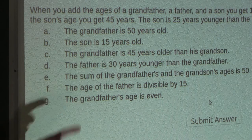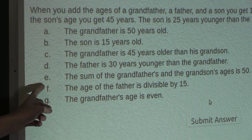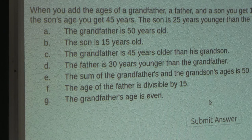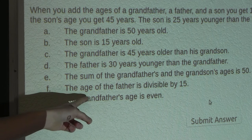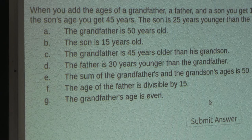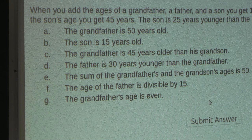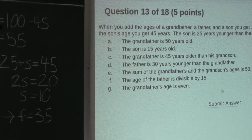Option D: the father is 30 years younger than the grandfather — no, he is only 20 years younger, because 55 minus 35 is 20. Option E: the sum of the grandfather's and grandson's ages is 50 — no, 10 plus 55 is 65, so that's false. Option F: the age of the father is divisible by 15 — no, the father is 35 and 15 does not divide into that evenly. Option G: the grandfather's age is even — false, 55 is odd. So the correct answer is option C: the grandfather is 45 years older than his grandson.